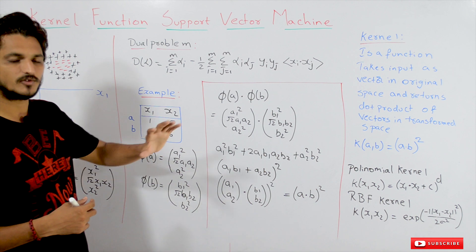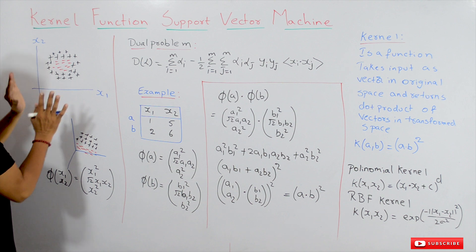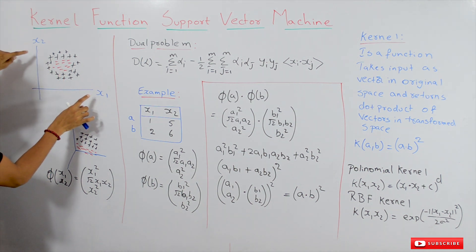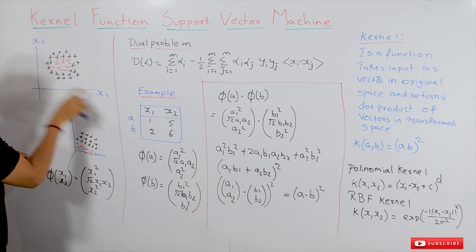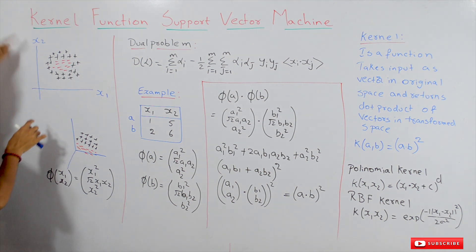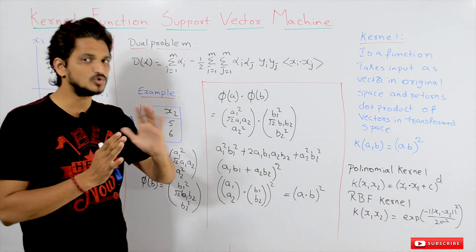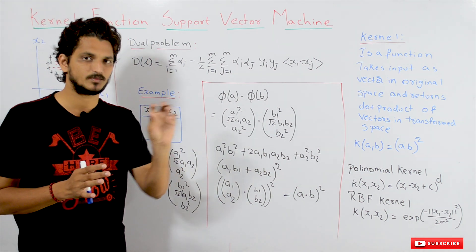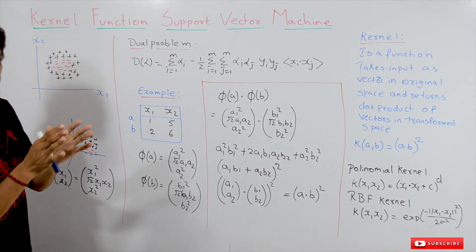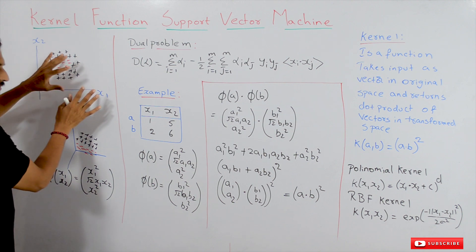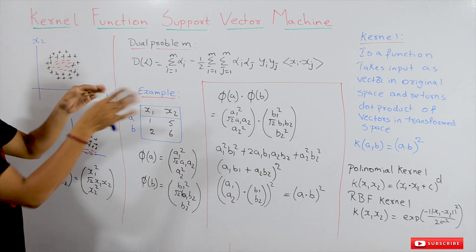Today's class we just refresh the concepts of our previous classes for a minute, then we go to kernel functions. The concept we already discussed: let's take a two-dimensional data set with positive and negative data points x1 and x2, taken on the x-axis and y-axis. This data set is not linearly separable, so if you apply support vector machine or logistic regression on this data set it won't work well. So what we did is transform this data into a higher dimension so that the data can be linearly separable.